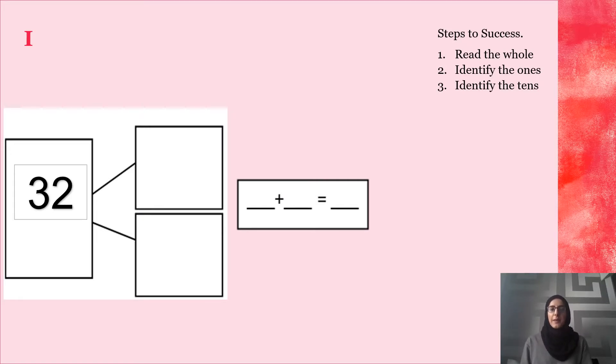We are going to be following the steps to success which are in the corner and we are going to partition this number. You probably recognize this as the part-part-whole model that you previously have done in class. I have the number 32. My success criteria first tells me to read the whole. The whole is 32.